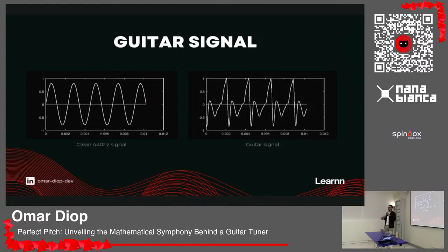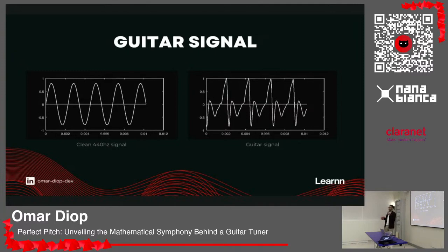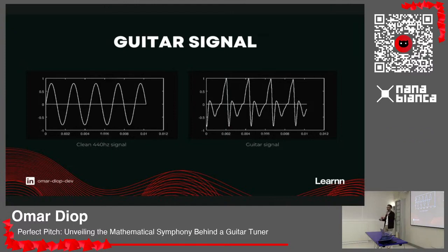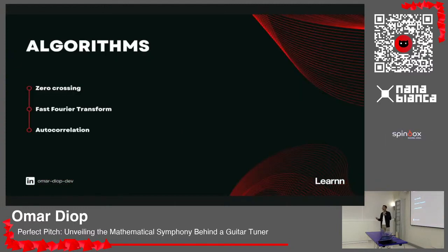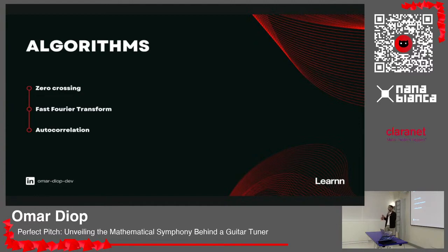The signal may differ because we can have clear signals, as you can see on the left — it's the signal made with the A4 note at 440 Hz. Then on the right you can see a guitar signal, which can be tricky because it's not easy to understand and can have noise inside it, making it difficult to determine the frequency. There are many ways to do it — I've studied zero crossing, the fast Fourier transform, and autocorrelation, which is the one I've actually used in the tuner.